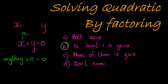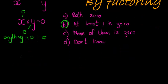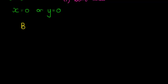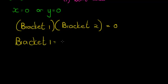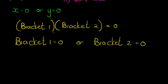So if x is zero, it doesn't matter what y is — the answer would be zero. If y is equal to zero, it doesn't matter what x is, it would be zero. So one conclusion we can make is that x is equal to zero or y is equal to zero. And this holds true for brackets as well. So if I have bracket one times bracket two and I get an answer of zero, then either bracket one is equal to zero or bracket two is equal to zero.